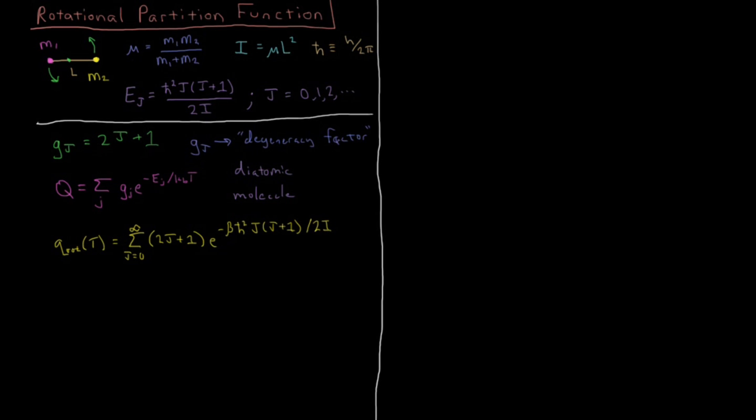What we're going to do is approximate this sum as the integral from 0 to infinity with respect to j of 2 times j plus 1 times the Boltzmann factor e to the minus beta h-bar squared j times j plus 1 over 2i.